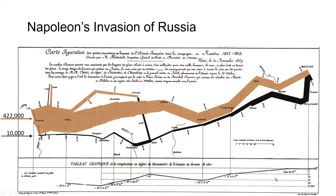At the bottom of Menard's map is a very interesting parallel display: an indicator of the temperature at key time points on the way back. Temperatures dropped to minus 30 Celsius as Napoleon's army traveled back through western Russia and Poland. It's a very significant military disaster with significant political implications, and the map depicts it clearly, also showing the key factor as to why it happened.